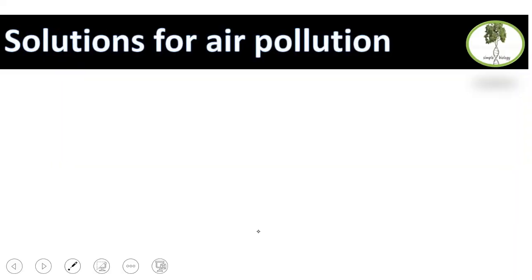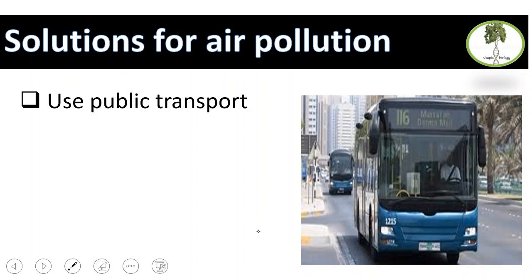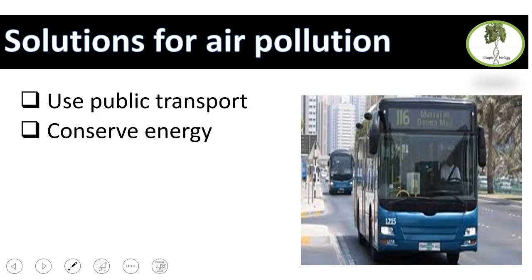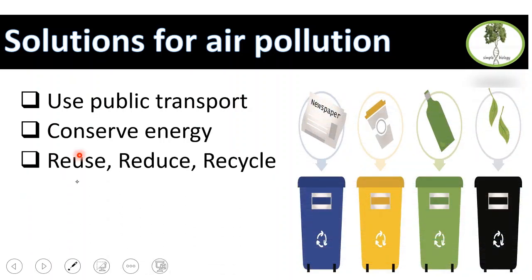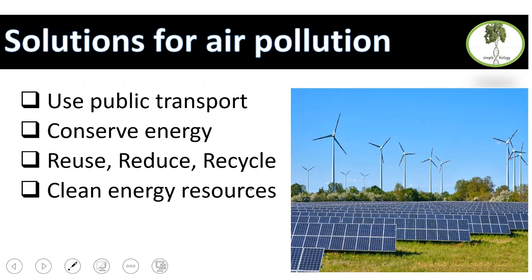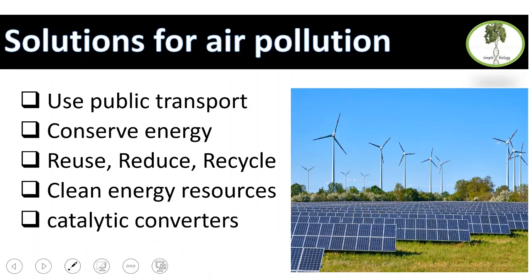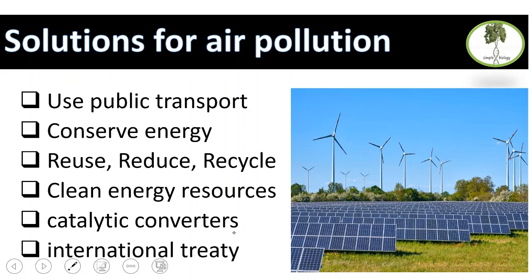What are the solutions for air pollution? First, use public transport instead of your car — one bus can accommodate 40 to 50 passengers instead of 40 to 50 individual cars. Conserve energy, and follow the three R's: reuse, reduce, and recycle. Use clean energy such as wind mills and solar panels instead of burning fossil fuels. Use catalytic converters in industries and factories to reduce gas emissions, and support international treaties that agree on reducing gas emissions into the atmosphere.